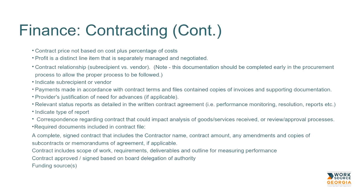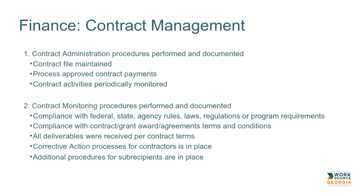We're also looking for scope of work, requirements, deliverables, and outlines for measuring performance. Things to look for in an application the subrecipient provides when procuring include contracts approved and signed based on board delegation of authority as well as funding sources — such as dislocated worker, youth, or adult money under WIOA. Contract administration procedures should be performed and documented, and you want to make sure that the files being maintained are up to date for those particular funds.